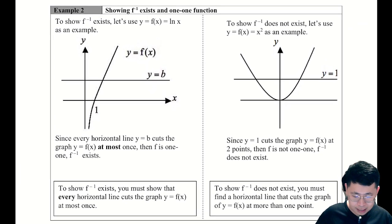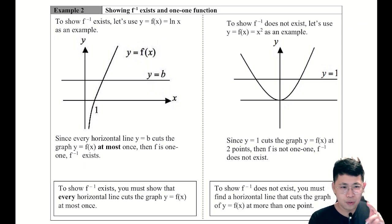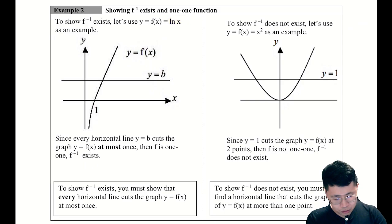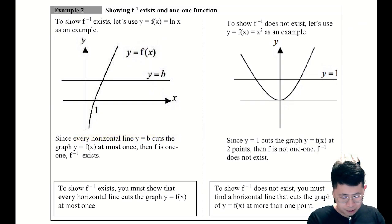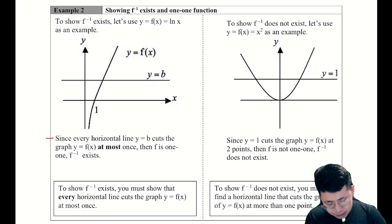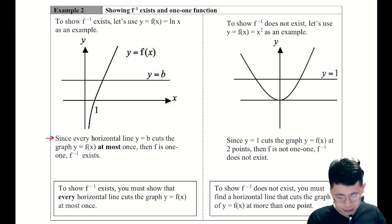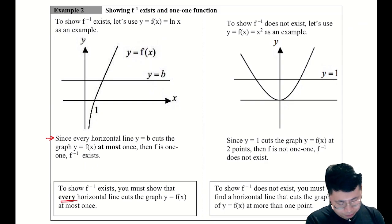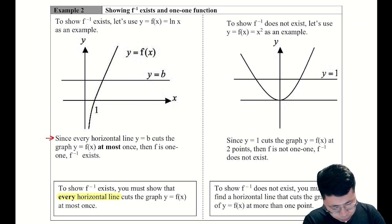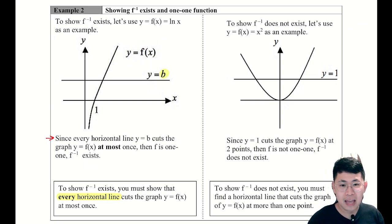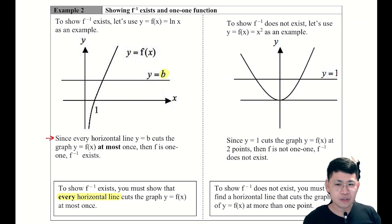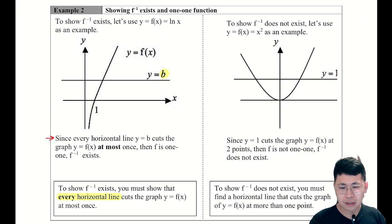Let's look at Example 2. For the graph of ln x — since every horizontal line y equals b cuts the graph at most once, f is one-to-one and f inverse exists. This is the exact phrasing to use. We let y equal b as a generic unknown, where b is a real number, to show it cuts at most once.